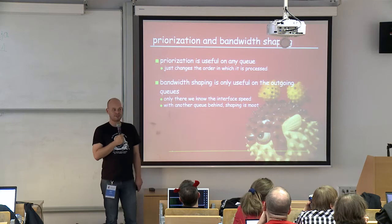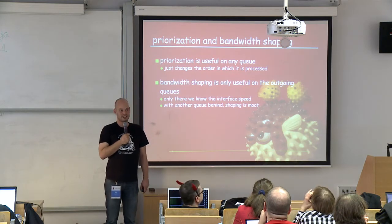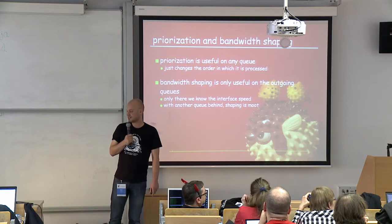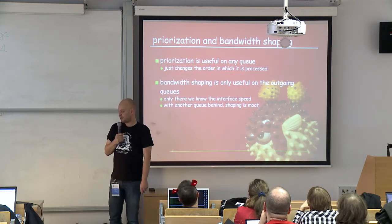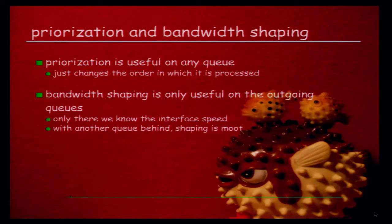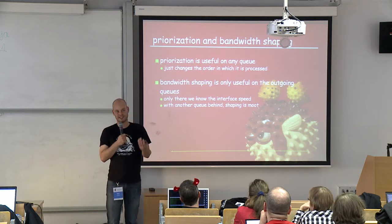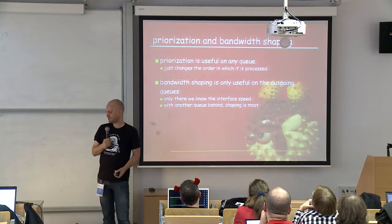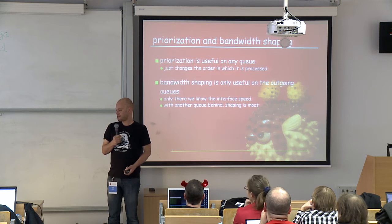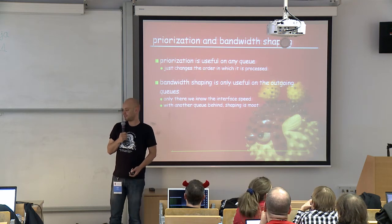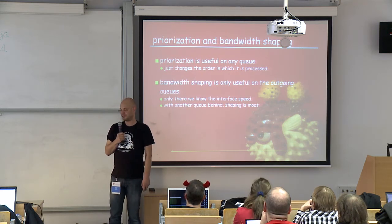Prioritization is useful on any queue, no matter where it is, because it just changes order and lowers latency. Bandwidth shaping, obviously, is only useful on the outbound queue. Doing bandwidth shaping on the IP interrupt queue is useless — packets would be put into another queue afterwards but sent out immediately. And at the IP interrupt queue we don't know the interface speed yet, so we have no idea whether the link is congested.